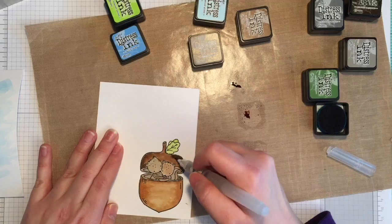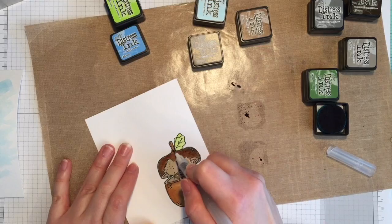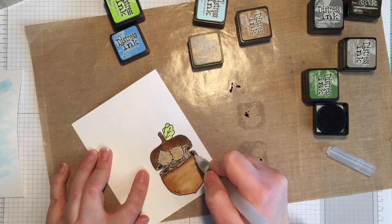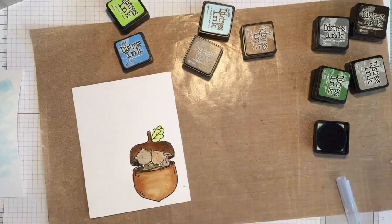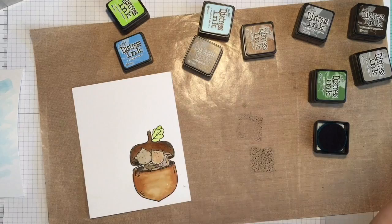And then once everything is dry I go back in with some Prismacolor pencil crayons and just add some details. So I'll add some texture to the cap of the acorn as well as some texture to the squirrels to make them look like they are furry. So that didn't happen to be taped but in the finished photo you'll be able to see some of those details.